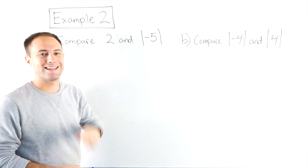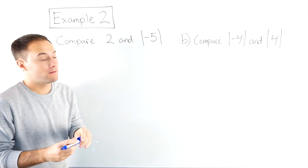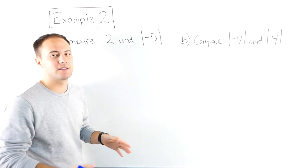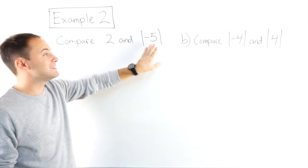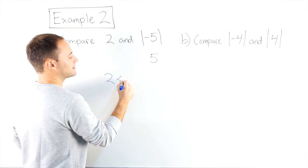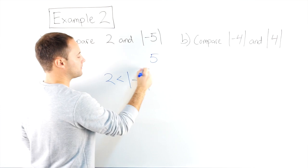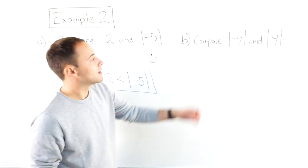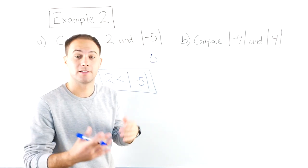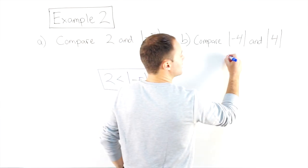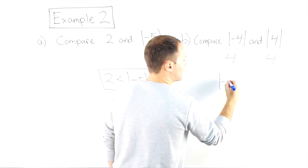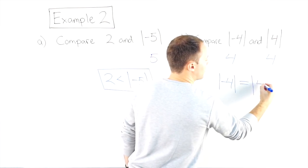Compare two and the absolute value of negative five. First we need to figure out what the absolute value of negative five is. We could draw a number line again and find our distance, but how far away is negative five from zero? The absolute value of negative five is five. So my answer is two is less than the absolute value of negative five. Let's look at part B: compare the absolute value of negative four and the absolute value of four. The absolute value of negative four is going to be four — negative four is four away from zero. And the absolute value of four is also four, which means the absolute value of negative four is equal to the absolute value of four.